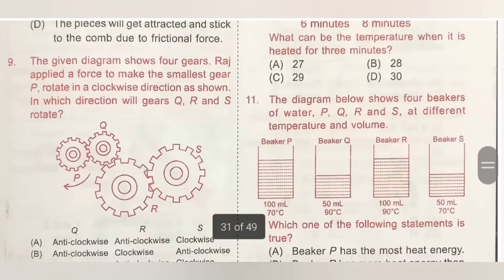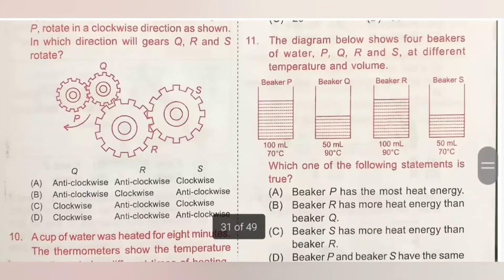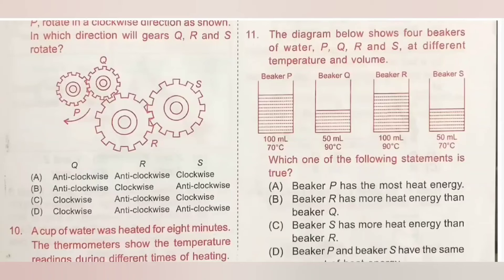Question 9: The given diagram shows four gears. Raj applied a force to make the smallest gear P rotate in a clockwise direction. In which direction will gears Q, R, and S rotate? Gears move in the opposite direction to the adjacent gear. Therefore, if P is rotating clockwise, Q rotates anti-clockwise, R rotates clockwise, and S rotates anti-clockwise. Option B is the correct answer.